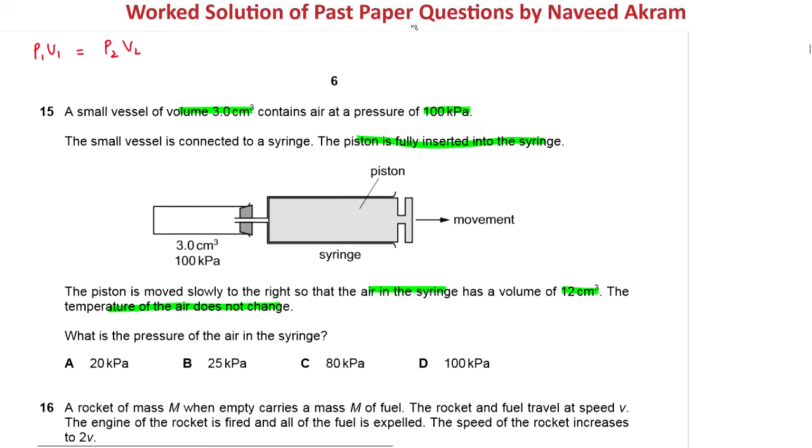For the left-hand term, we have the vessel with a volume of 3 cubic centimeter and pressure of 100 kilopascal. So we write 3 times 100.